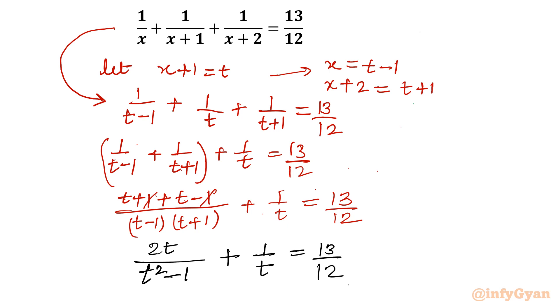Now we will take LCM of the complete left hand side. I will write 12 times, after taking LCM we can multiply. 2t times t plus t square minus 1 in the LHS, and the other side would be 13t times t square minus 1.